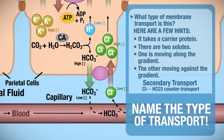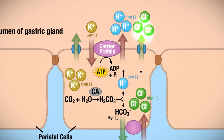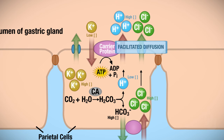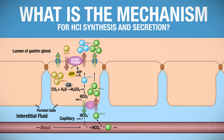This specifically is called chloride-bicarbonate countertransport. Once chloride ions reach a high concentration in the cytoplasm, they're transported toward a lower concentration into the lumen through a channel — facilitated diffusion. Now we have hydrochloric acid, HCl, in the lumen, and that's where we wanted to get.